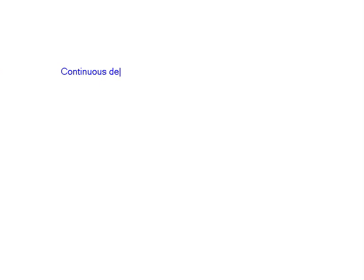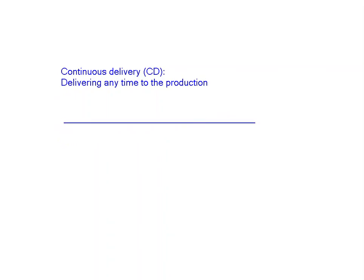Continuous delivery, in short called CD, is nothing but delivering any time to production. Continuous delivery is a pipeline or a life cycle of a code — you can also call it a pipeline.